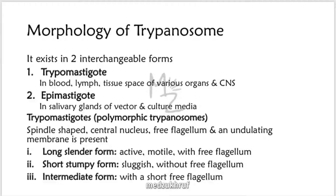Morphology of Trypanosoma. It exists in two interchangeable forms. The first is trypomastigote, found in blood, lymph, tissue spaces of various organs, and the central nervous system, including the brain and spinal cord. The other form is amastigote, found in the salivary glands of the vector. Trypomastigotes are also called polymorphic trypanosomes — poly means many and morph means shapes, so trypomastigotes have many shapes.